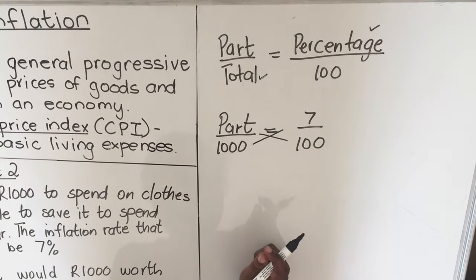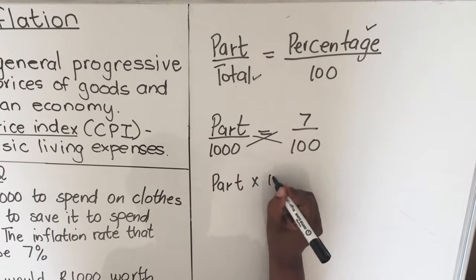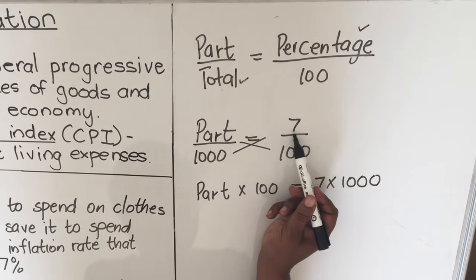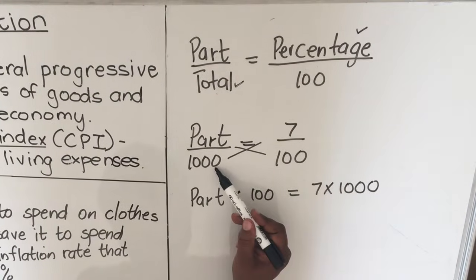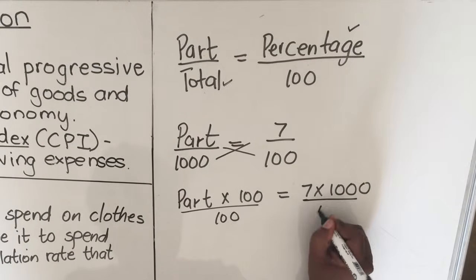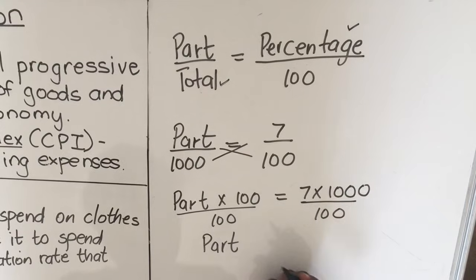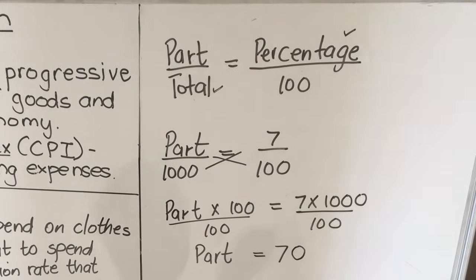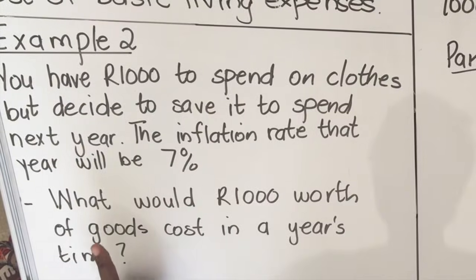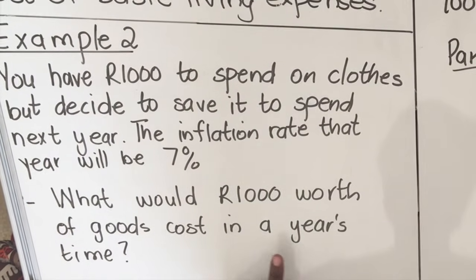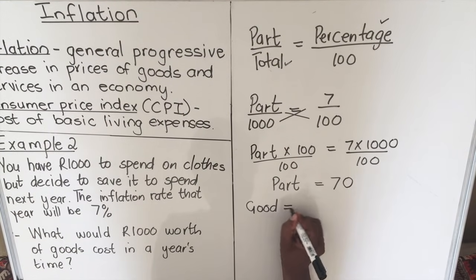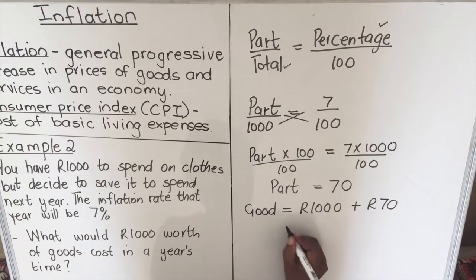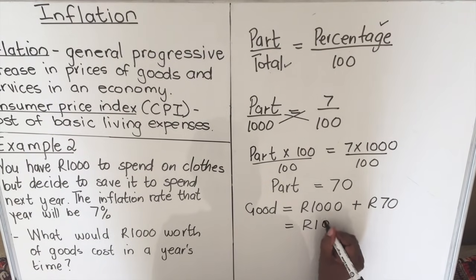Cross-multiplying — you remember cross-multiplication from Grade 8 — gives us: part times 100 equals 7 times 1000. Dividing both sides by 100, we get 7 times 1000 divided by 100, which equals 70 rands. But we have not yet answered our question. The question was: what would 1000 rands worth of goods cost in a year? The goods cost 1000 rands this year, plus 70 rands at 7 percent of 1000.